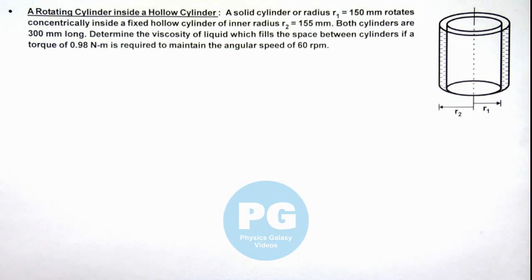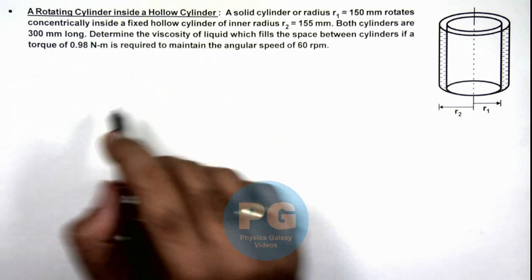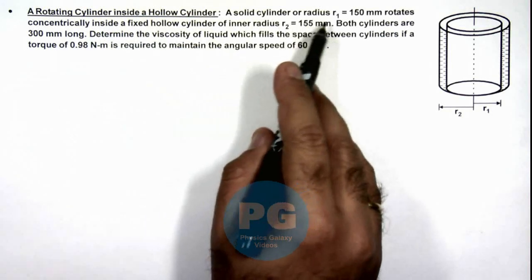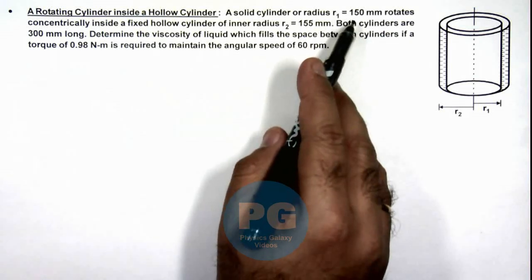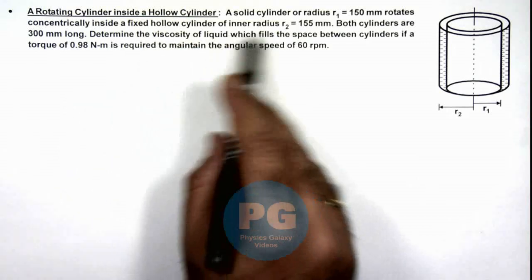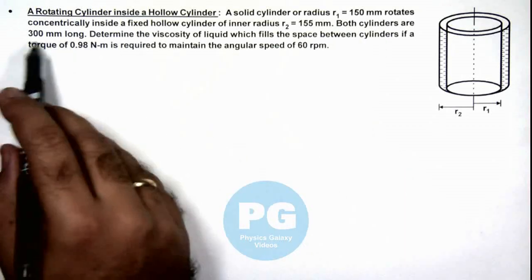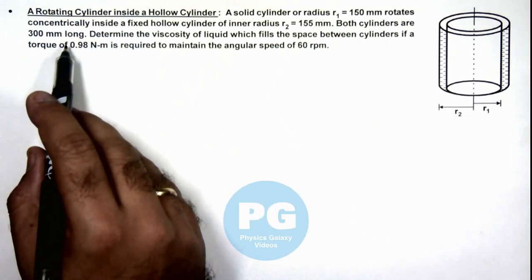In this illustration, we'll discuss a rotating cylinder inside a hollow cylinder. We are given that a solid cylinder of radius r1, which is 150 mm, rotates concentrically inside a fixed hollow cylinder of inner radius r2. Both cylinders are having a length of 300 mm.